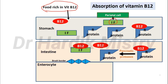Vitamin B12 binds with the R protein rather than the intrinsic factor inside the stomach. This R protein and vitamin B12 complex enters the intestine. Inside the intestine, pancreatic proteases cleave the bond between vitamin B12 and the R protein, releasing vitamin B12. This free vitamin B12 then binds with the intrinsic factor, which was already released from the parietal cells of the stomach and is present in the intestine.